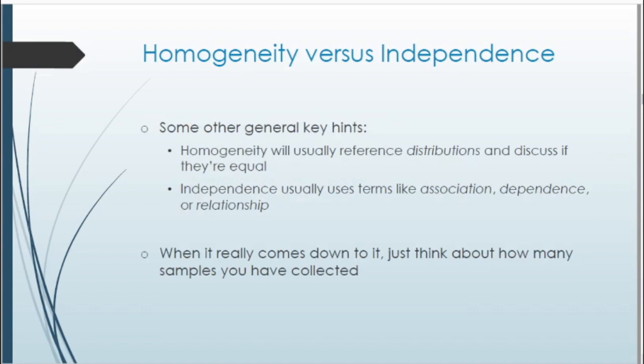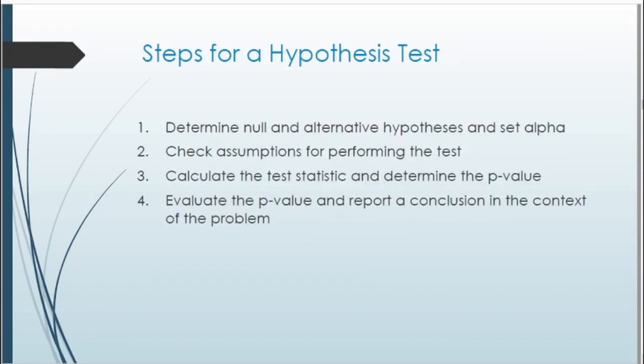Some general key hints: homogeneity usually references distributions and discusses if they're equal, while independence usually uses terms like association, dependence, or relationship. These are good keywords to look for when identifying the type of test. These are still hypothesis tests, so we follow four steps: first, set up our hypotheses; second, state and check our assumptions; third, calculate our test statistic and p-values; fourth, report conclusions and make decisions.